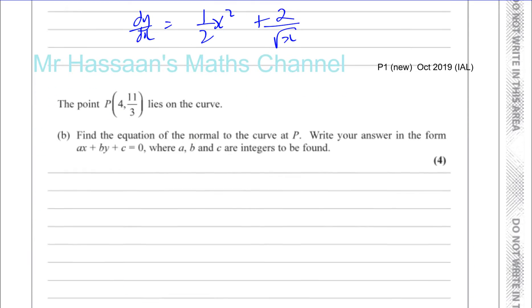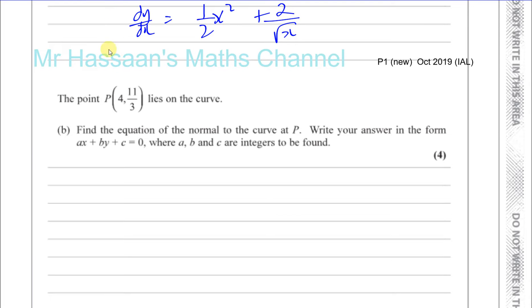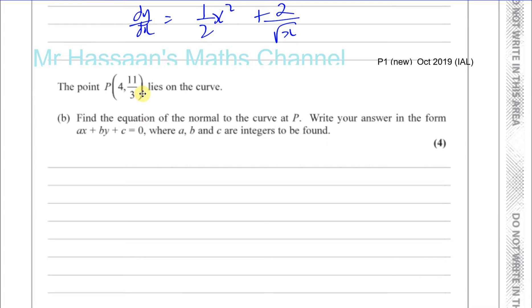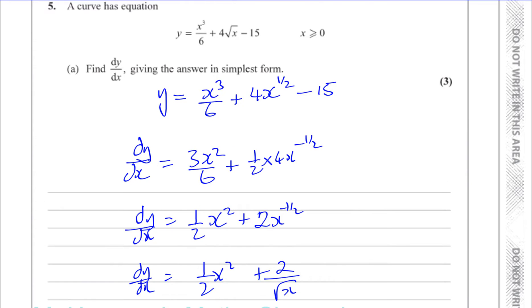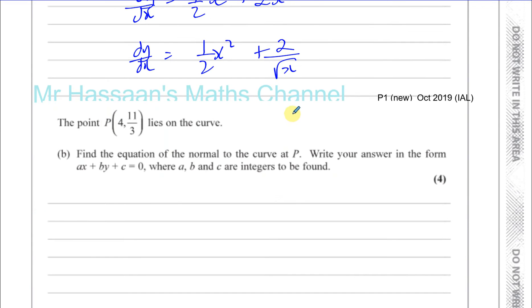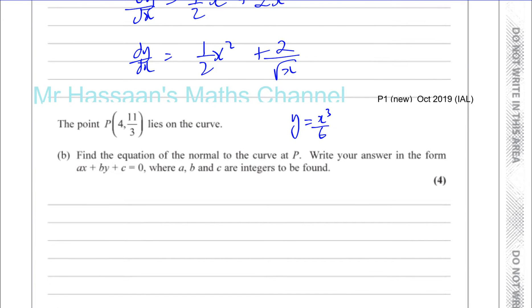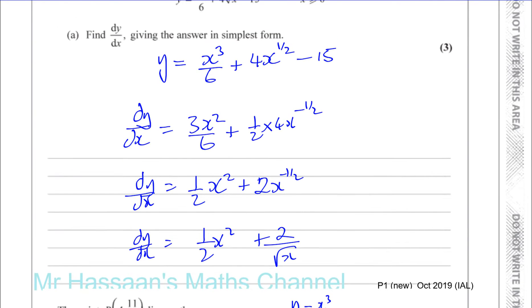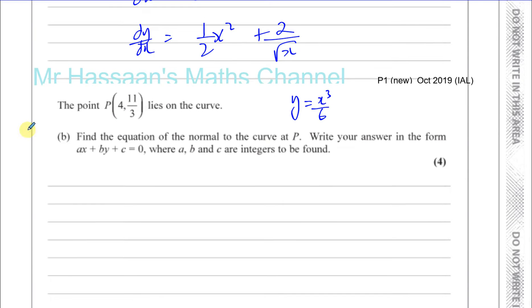Part b says the point P, which is x equals 4 and y equals 11 over 3, lies on the curve. The original curve is y equals x cubed over 6 plus 4 root x minus 15, and here we have the gradient function.